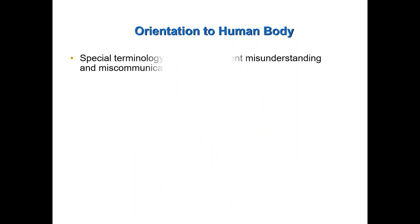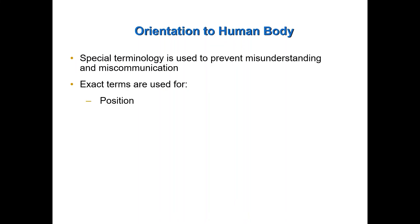Anatomy and physiology has its own language — special terminology used to prevent misunderstandings or miscommunications between health professionals or scientists. There are very specific terms that describe a position on the body or on an organ, directions from one specific location on the body to another, regions on the body, and physiological conditions. For example, we can refer to a high blood sugar level as hyperglycemia. And there is very specific terminology used to describe or refer to structures. It is very important that you master this language.